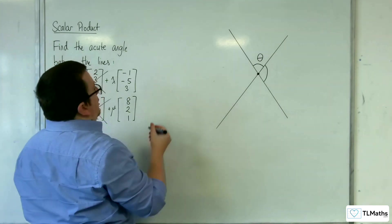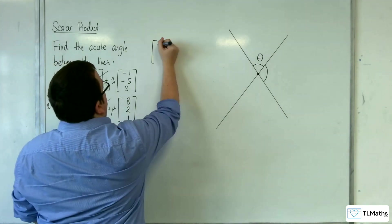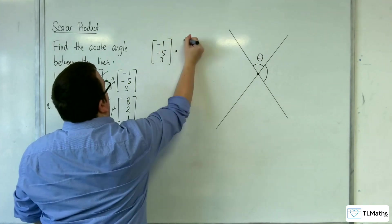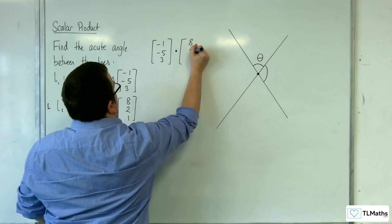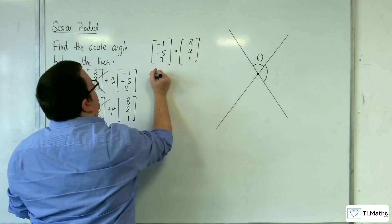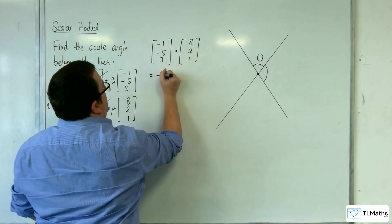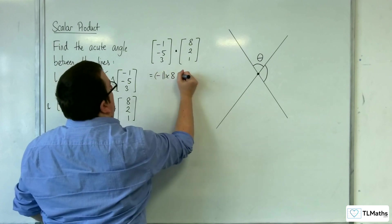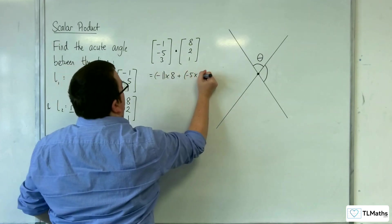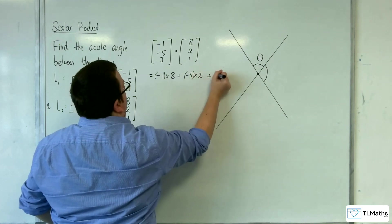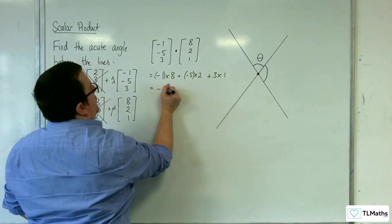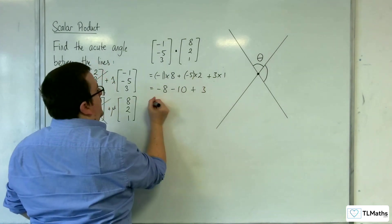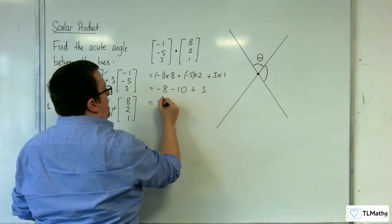So the first thing that I'm going to do is dot them together: (-1, -5, 3) dot (8, 2, 1). And we get minus 1 times 8 plus minus 5 times 2 plus 3 times 1. So minus 8 take away 10 plus 3. So minus 18 plus 3 is minus 15.